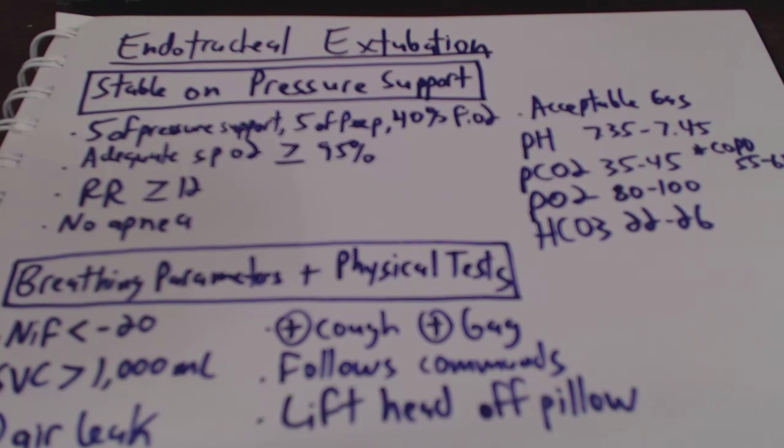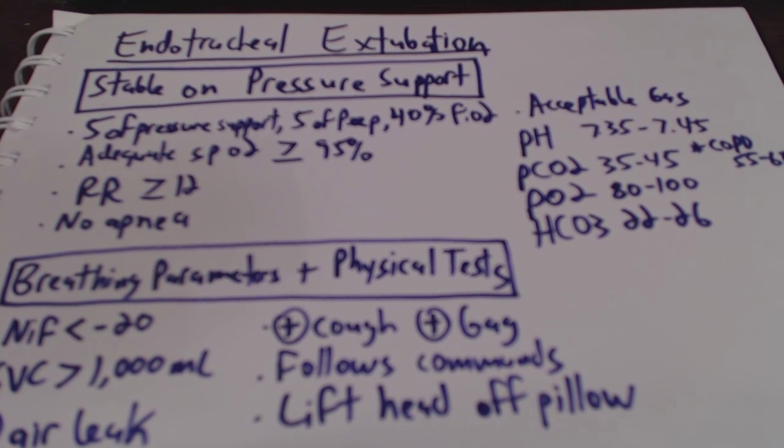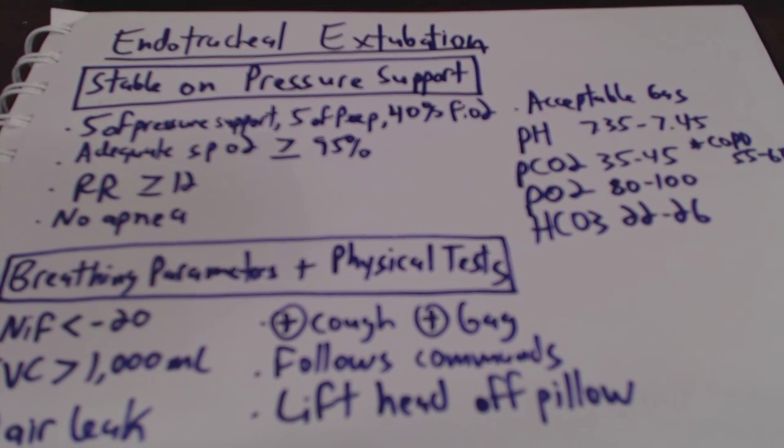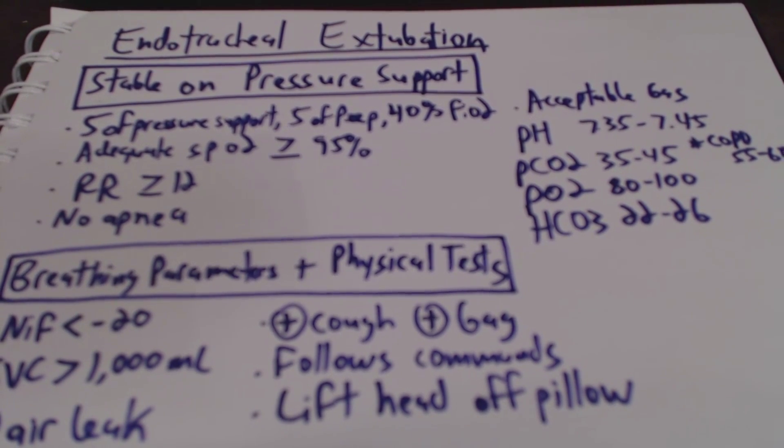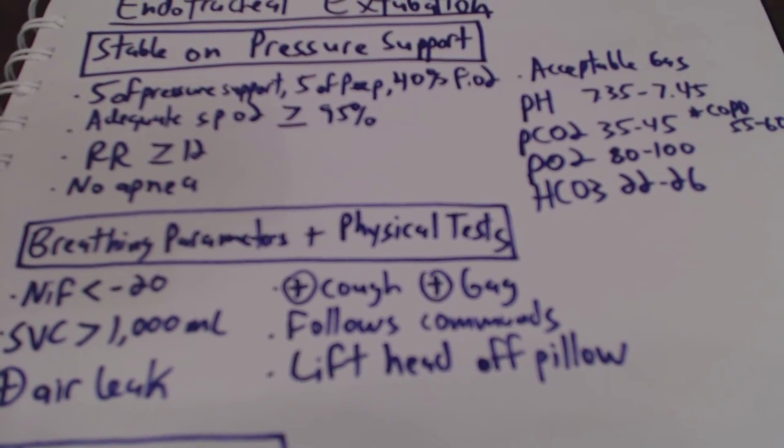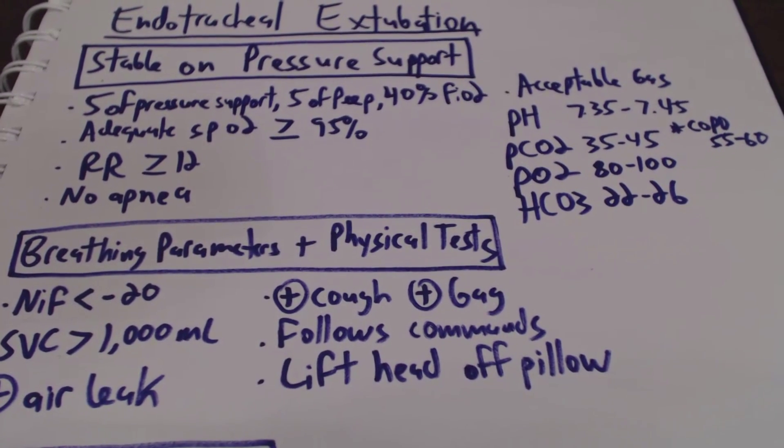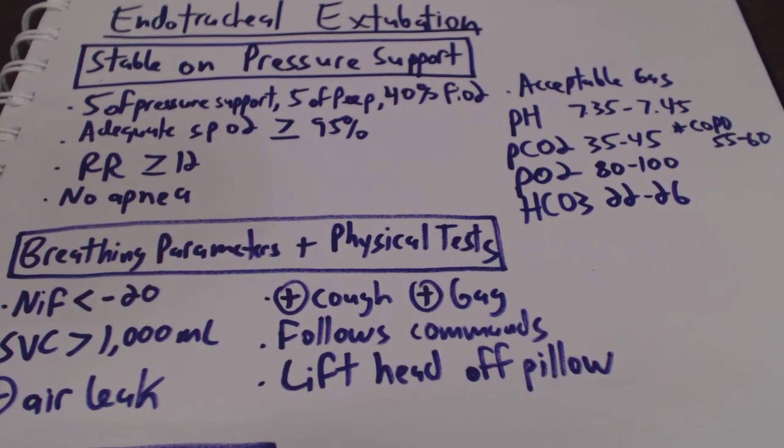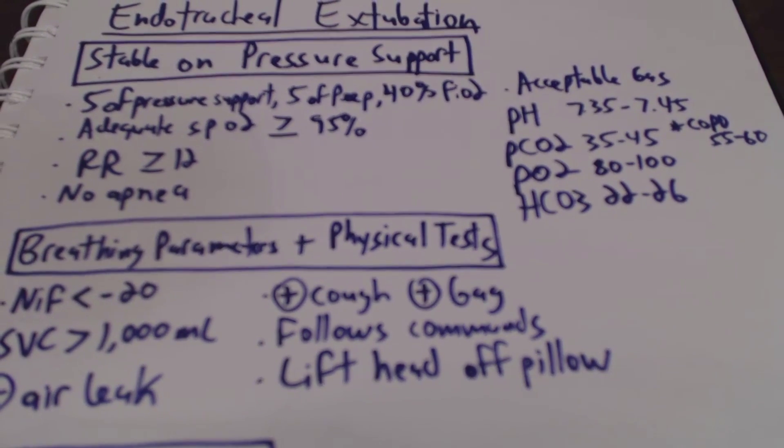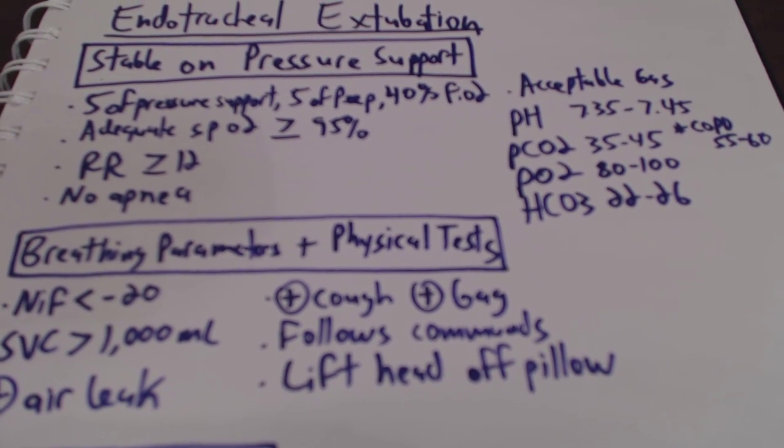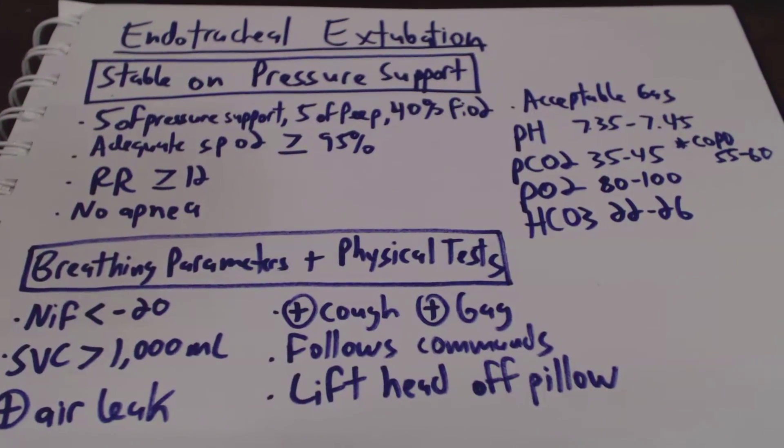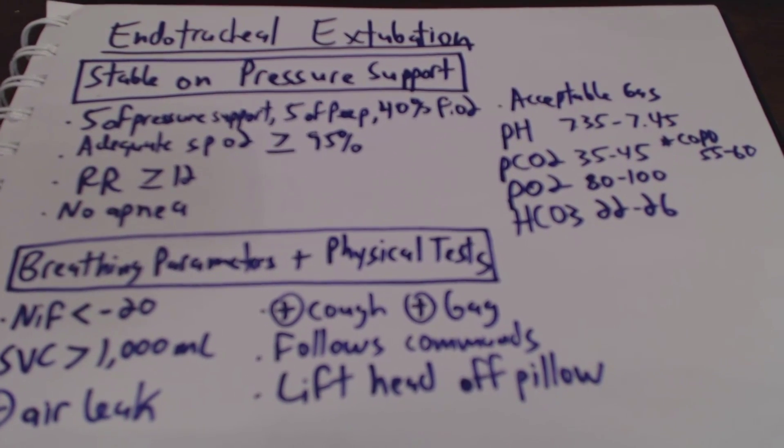The first thing we want to do is make sure that the patient is stable on pressure support or CPAP, and traditionally speaking, that'll be 5 of pressure support, 5 of PEEP, and 40% FiO2. We also want to make sure that the patient has adequate SpO2, which is greater than or equal to 95%, and we want the respirations greater than or equal to 12. We also want to make sure that there's no episodes of apnea.